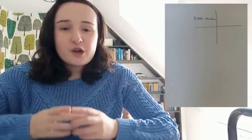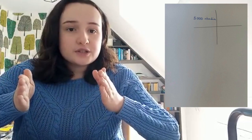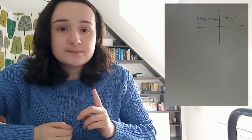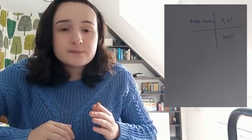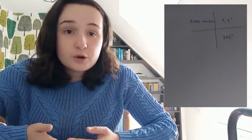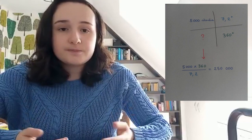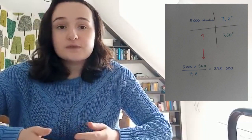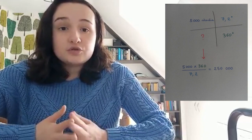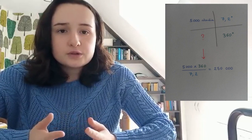Now it's time to determine the circumference of the Earth. We know that the distance between the two cities is 5,000 stadia at an angle of 7.2 degrees. We then use the value of 360 degrees to establish a proportional relationship whose unknown is the circumference of the Earth. Thus, Eratosthenes found that the circumference of the Earth is 250,000 stadia, which is about 40,000 km.